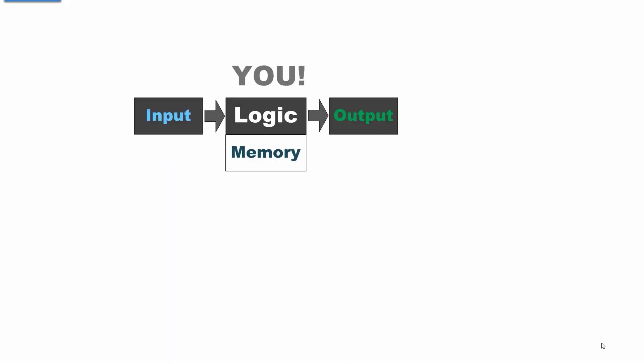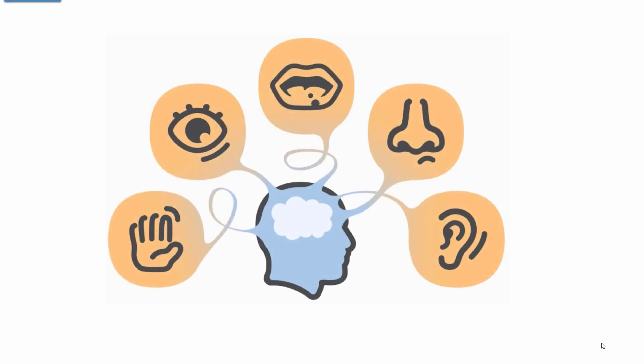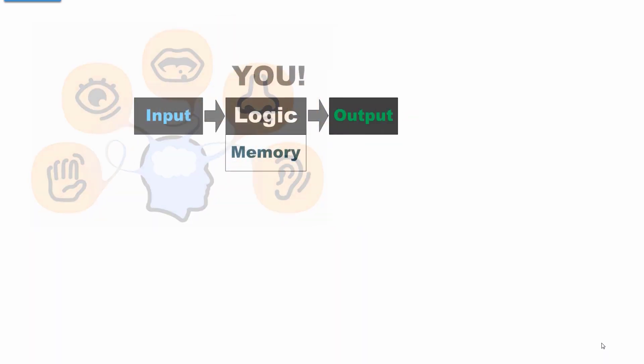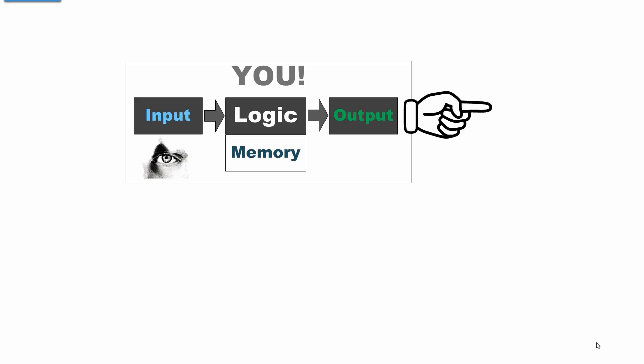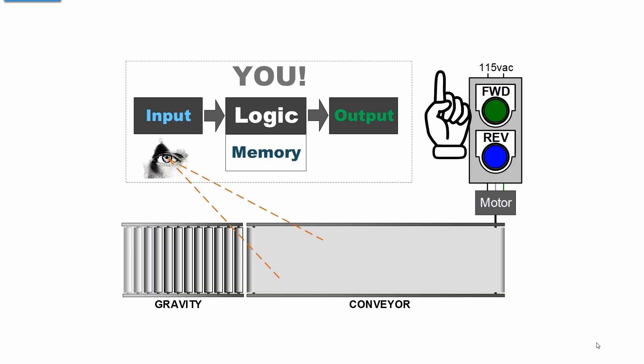Your logic originates in your brain. It is a result of something that you want to accomplish which is stored in your memory and the result of your observation from your five senses. Your output from your logic is a muscular action. Essentially you clone your observations and reactions into the programmable logic controller.